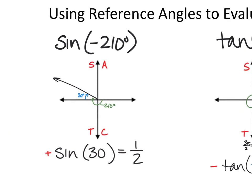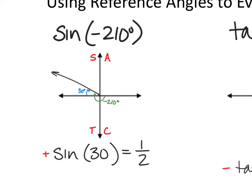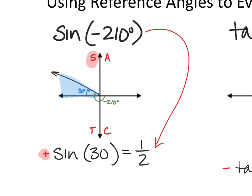Example: find sine of negative 210 degrees. Draw the angle — negative 210 is 30 degrees past negative 180, landing in quadrant 2. This creates a 30-60-90 reference triangle. In quadrant 2, sine is positive. So instead of dealing with negative 210 directly, we use the reference angle: sine of 30° = 1/2. The sine of negative 210 degrees is 1/2.